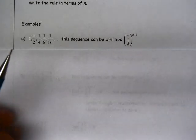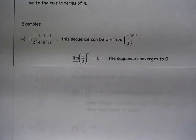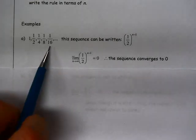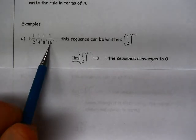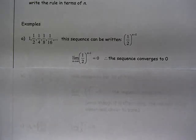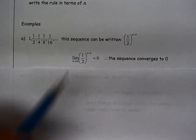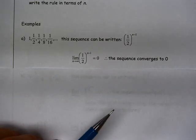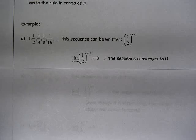All right, so we could write this as 1 half raised to the n minus 1 power. And we can really just see by looking at this that the larger our n value, the smaller our last term is going to become. So eventually we are going to approach 0 as that term, the denominator, approaches infinity.